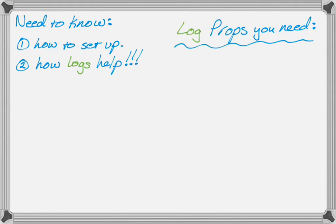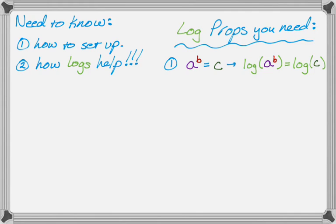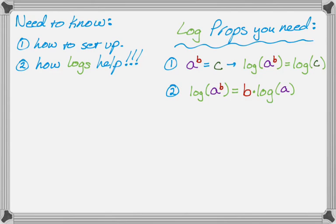These are the log properties you need to solve these problems. The first one: if a to the b is equal to c, then the log of a to the b is equal to the log of c — we can just take the log of both sides, working in base 10. The second property is that the log of a to the b equals b times the log of a — exponents become coefficients. Those are the only two log properties you need, and a calculator will do almost all the work for you.